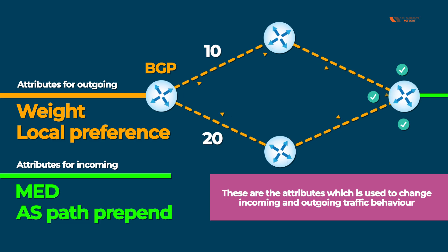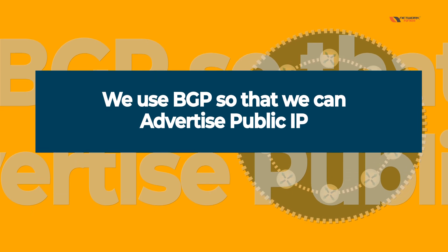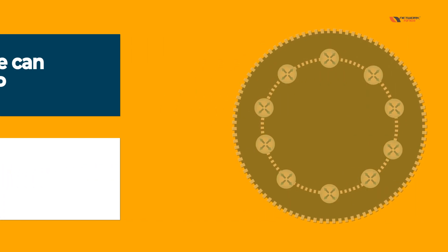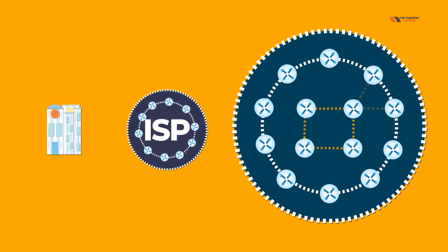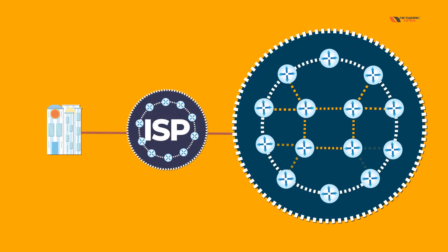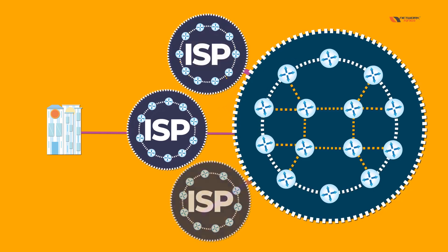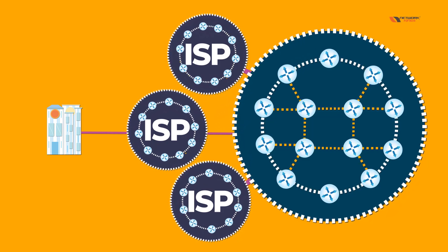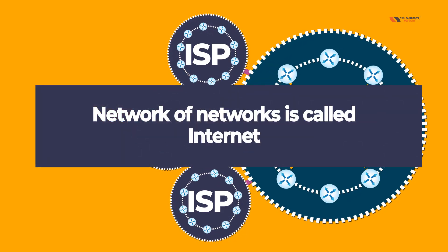Another reason we use BGP is to advertise public IPs. Public IP doesn't mean just one single IP. This is the internet, this is your company, and this is the ISP connecting you to the internet. There are many ISPs connected to the internet, collaborating with each other — this is why the whole network of networks is called the internet.